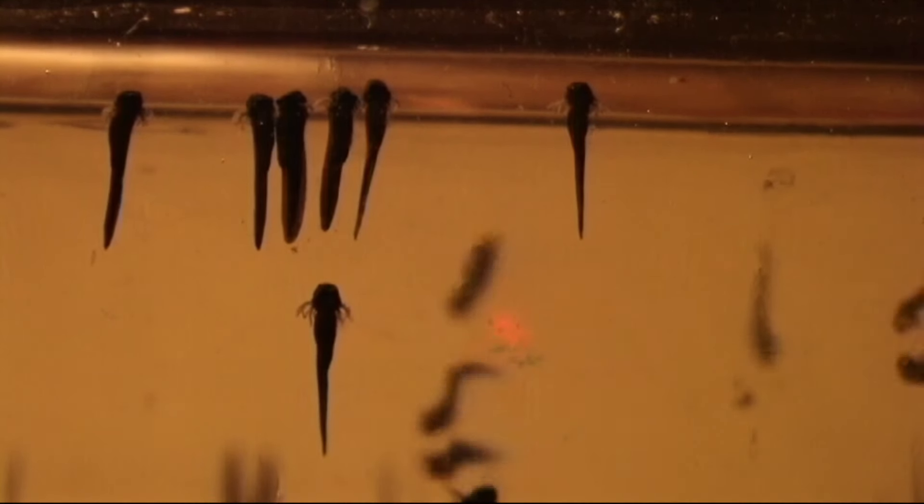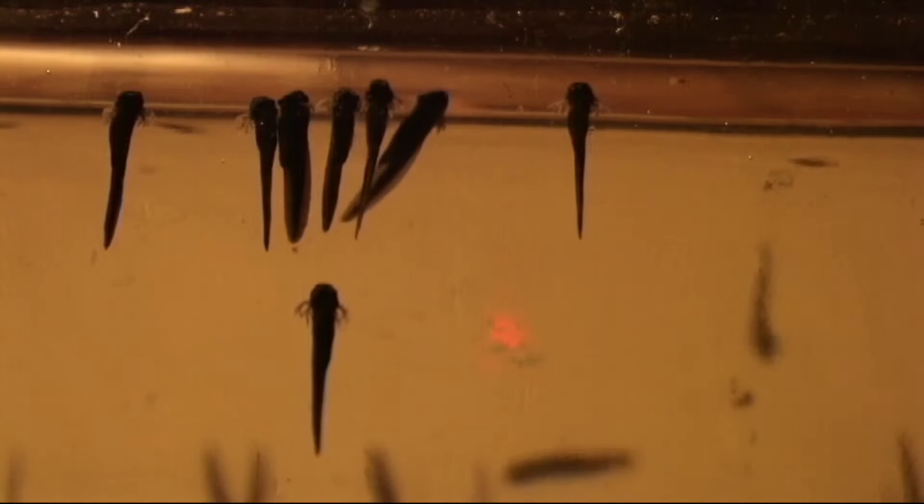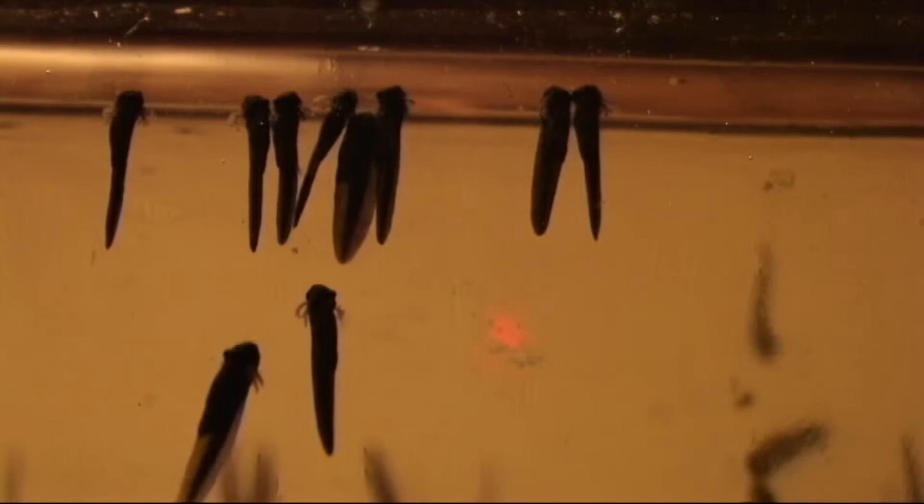External gills are known shortly after hatching in frog tadpoles, in the larvae of caecilians, that's a group of amphibians, and also in the larvae of lungfish. These are fish very closely related to amphibians.